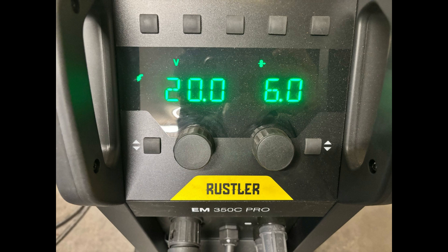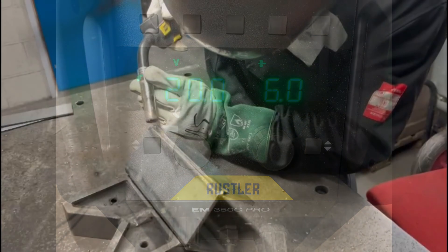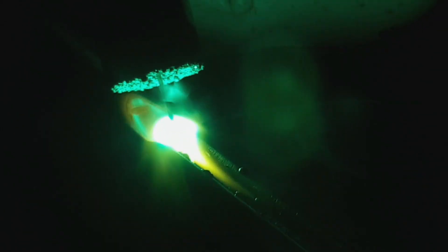So now moving on to our 6mm we've got 20 volts and 6m a minute wire speed. The difference here is we've got a slight root gap of about half a millimeter just to enable us to get that penetration through now that we're working on thicker plate.